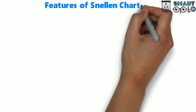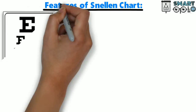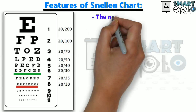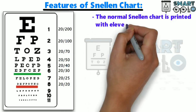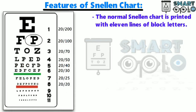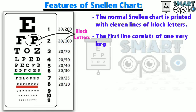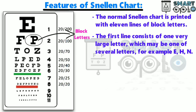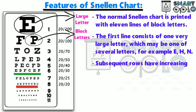Features of Snellen's chart: The normal Snellen's chart is printed with 11 lines of black letters. The first line consists of one very large letter, which may be one of several letters — for example, E, H, and N. Subsequent rows have an increasing number of letters that decrease in size.